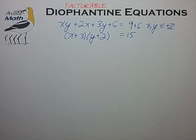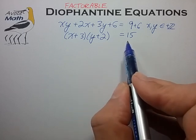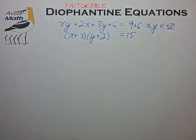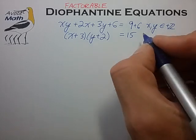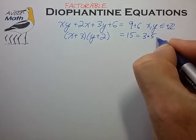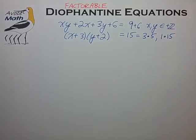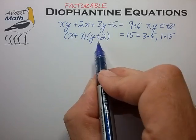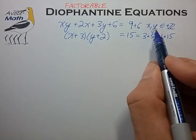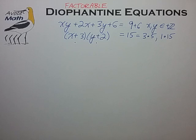Now we can use the fundamental theorem of arithmetic to compare and match the factor pairs on the left to all possible factor pairs on the right to help determine the possible solutions for x and y. In this case we have to write 15 as possibly 3 times 5 or perhaps 1 times 15. When we look at the factor pair on the left, we quickly realize that since both x and y are 1 or greater, both of these factors have to be greater than 1.